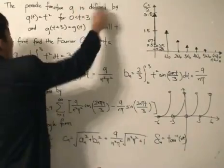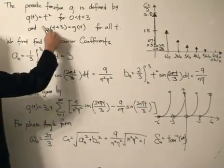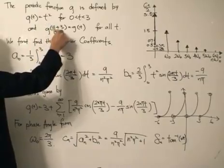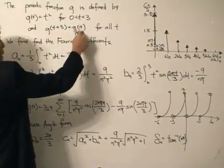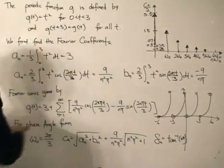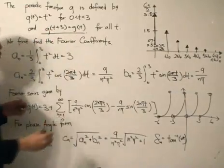The periodic function g is defined by this one over here, and g(t+3) equals g(t) for all t. This statement tells us the period of g. Most periodic functions will be defined in this way.